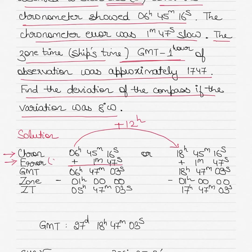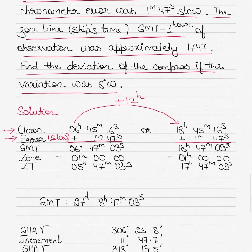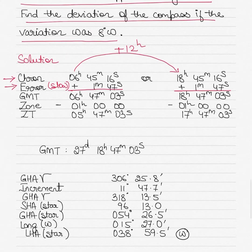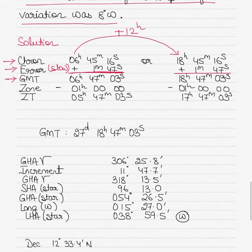If the error is slow, we add it; if fast, we subtract it. The error is 1 minute 47 seconds slow, so we add the same error in both cases. Once you add the error to the chronometer time, you get your GMT. The two possibilities become either 6h 47m 03s or 18h 47m 03s.